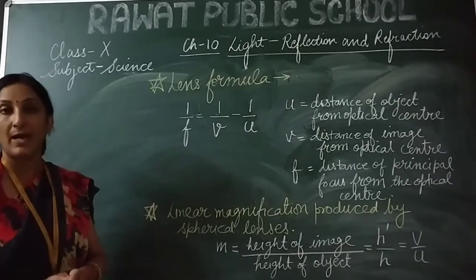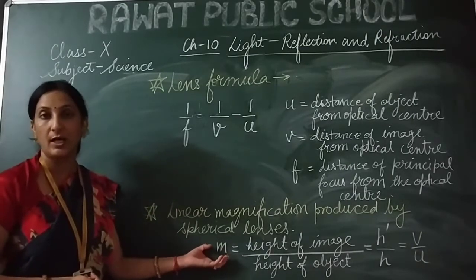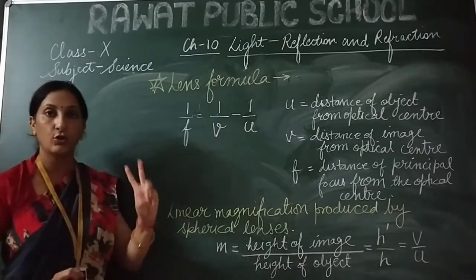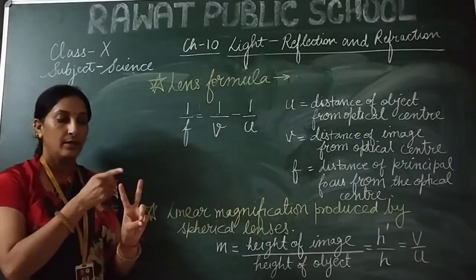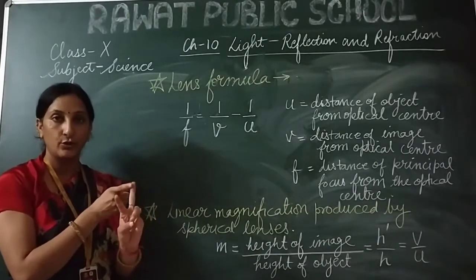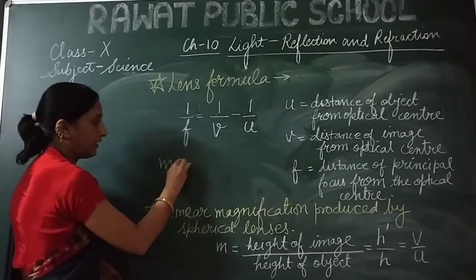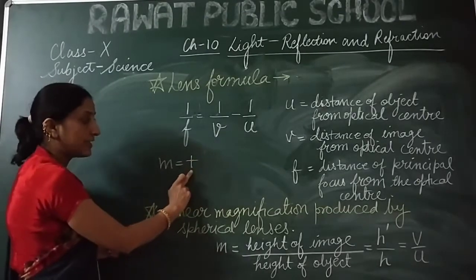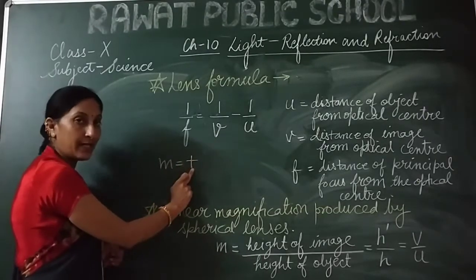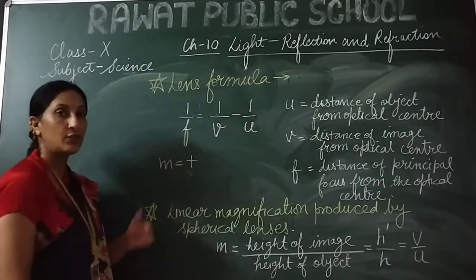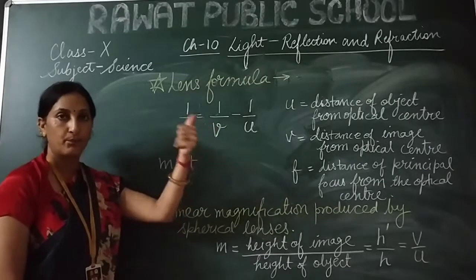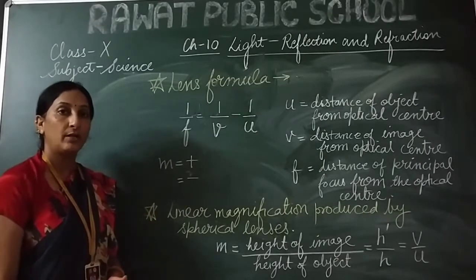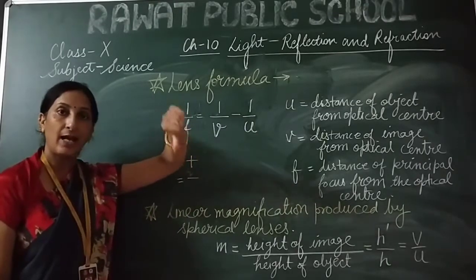As I mentioned before, magnification has two components. First is the sign, second is the magnitude. If M comes out with a positive sign, it means the image is virtual and erect. If the sign is negative, it means the image is real and inverted.